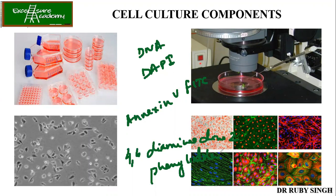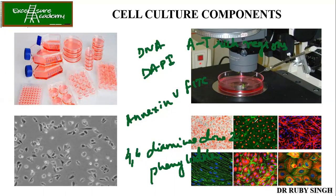The full form of DAPI is 4,6-diamidino-2-phenylindole. It binds only to your DNA, and within DNA it binds specifically to adenine-thymine-rich regions. These are the key features of DAPI. Wherever you see the blue color in a fluorescence image, that is DAPI — and it will only stain your nucleus.